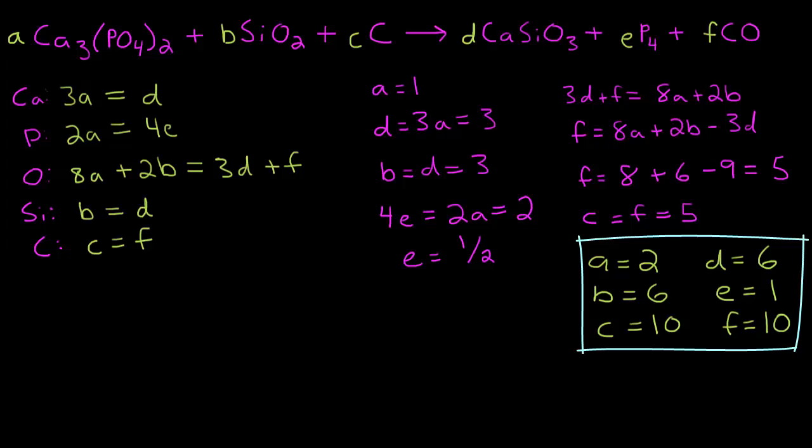Okay, so let's put all of our variables into the original chemical equation and see what we get. So we have A is two. So 2 Ca₃(PO₄)₂ plus B is six, so 6 SiO₂ plus C is ten, so plus 10 carbon. It's going to react to form D is six, so 6 CaSiO₃. E is one, so plus one P₄ plus F, so plus 10 CO.